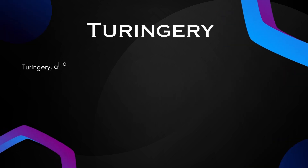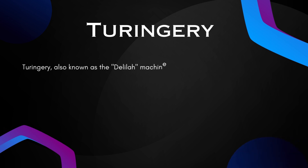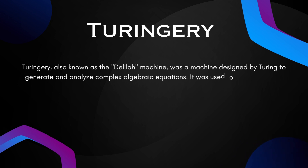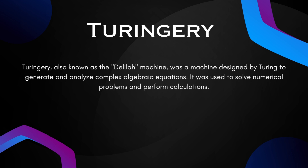Turingery, also known as the Delilah machine, was a machine designed by Turing to generate and analyze complex algebraic equations. It was used to solve numerical problems and perform calculations.